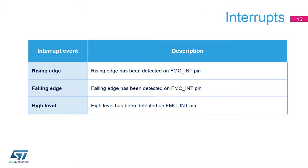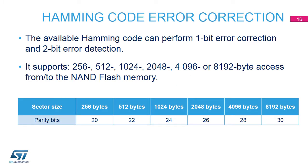The NAND controller offers three interrupt sources: rising edge, falling edge, and high-level detection on the FSMC INT pin when connected to the ready-busy signal from the NAND Flash memory. The available Hamming code can perform 1-bit error correction and 2-bit error detection per 256, 512, 1024, 2048, 4096, or 8192 byte access from or to the NAND Flash memory. It consists of calculating the row and column parity, and is supported by 8-bit and 16-bit NAND Flash memories.